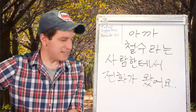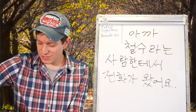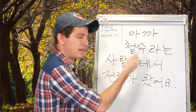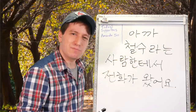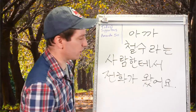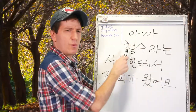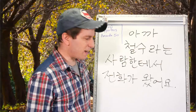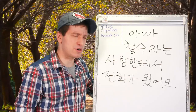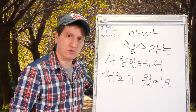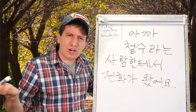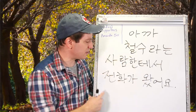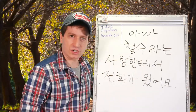아까 철수라는 사람한테서 전화가 왔어요. 철수라는 사람 — a person named 철수. 한테서 from, 전화가 왔어요. So I got a phone call a little while ago from a person named 철수. Someone named 철수 called a little while ago.